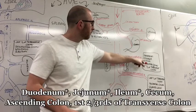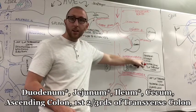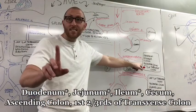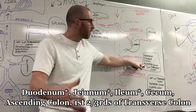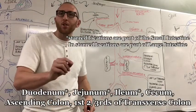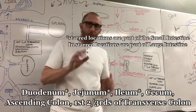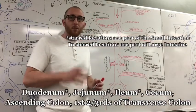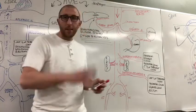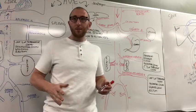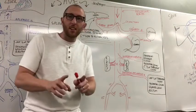But we've got the duodenum, we've got the jejunum, the ileum, the ascending colon, cecum and ascending colon, and the first two-thirds of the transverse colon. First two-thirds. That's a very important cutoff from the superior mesenteric artery and the inferior mesenteric artery.